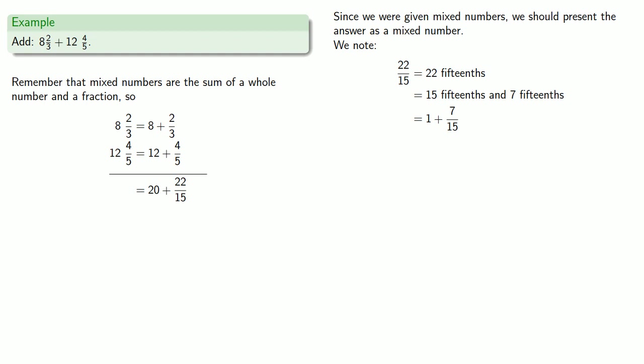Equals means replaceable, so 22/15 is 1 plus 7/15. So we'll replace. We now have a sum of whole numbers, which we can do. We have a whole number plus a fraction, which we can write as a mixed number, 21 and 7/15.